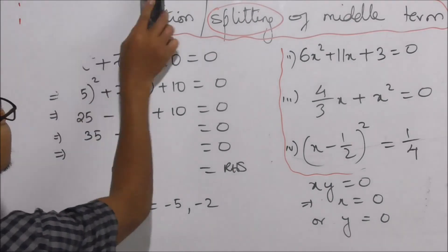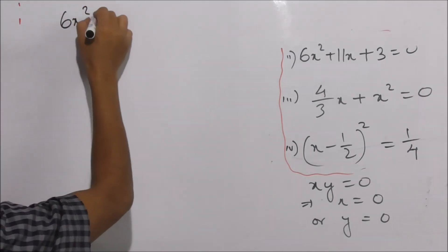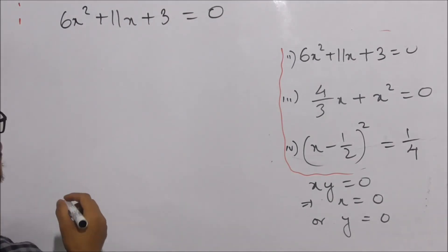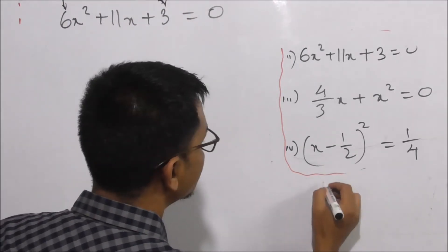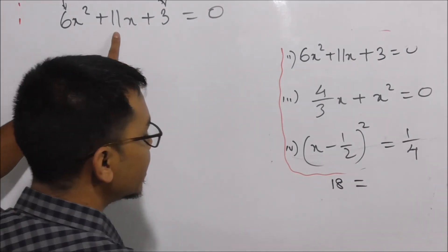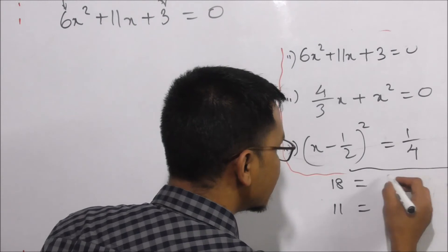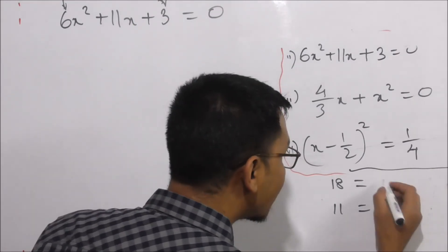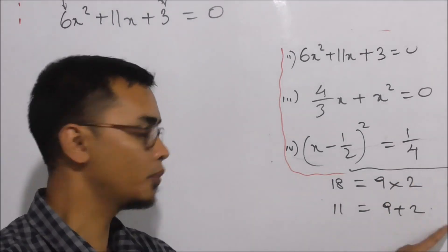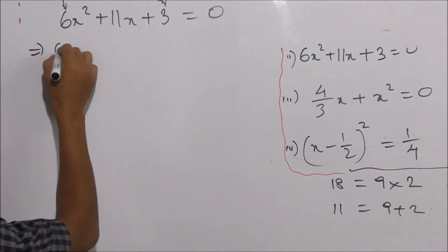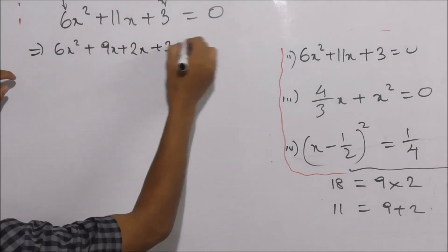We have to multiply 6 into 3. So 6x² plus 11x plus 3 is equal to 0. We need to multiply 6 and 3: 6 into 3 is 18. We have the middle term 11, and we split 18 as 9 plus 2, since 9 times 2 is 18 and 9 plus 2 is 11. So 6x² plus 9x plus 2x plus 3 is equal to zero, where 9x plus 2x is 11x.